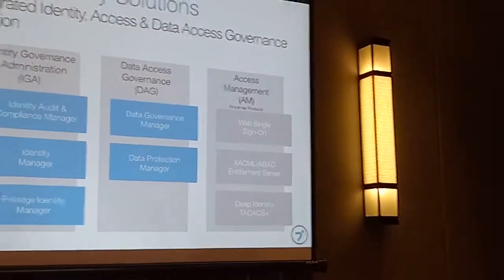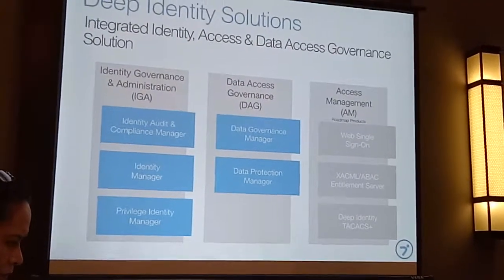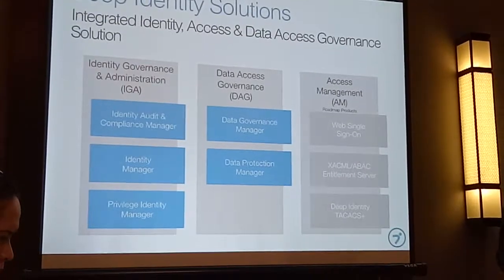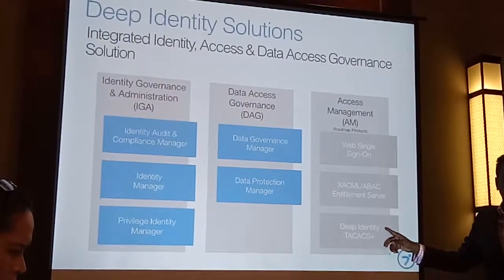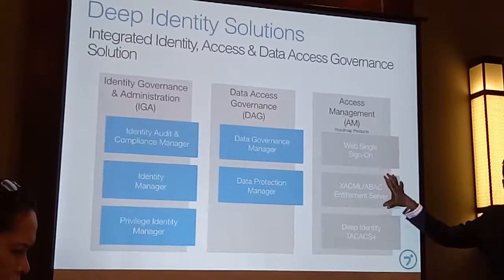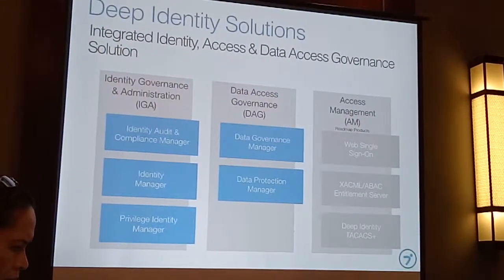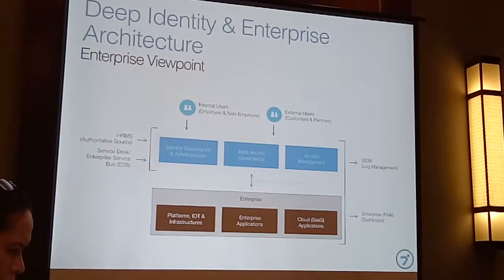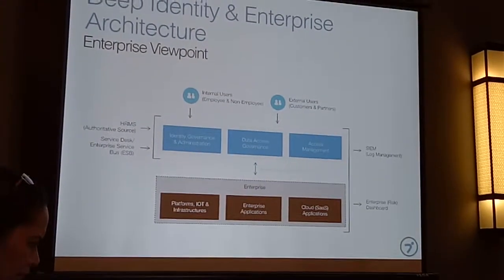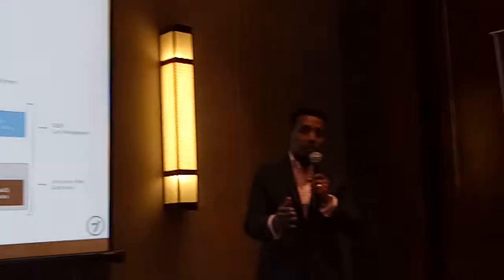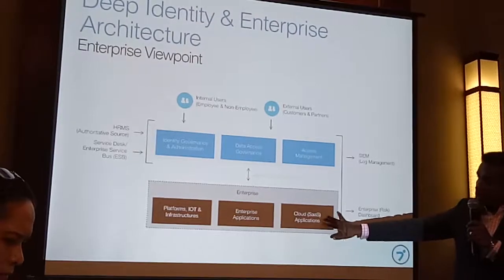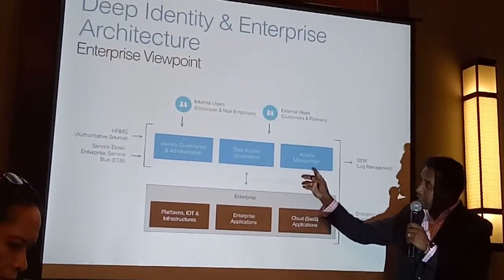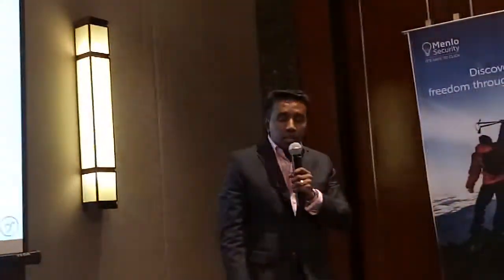I also want to share Deep Identity's roadmap. We are going to soft-launch our Access Management pillar, starting from Web Single Sign-On, an Entitlement Server, and technology that helps manage infrastructure like routers, switches, and appliances — coming sometime this year. What we are trying to address is end-to-end management of users, their access to application infrastructure, and their data. If you look at the diagram, we have enterprise platforms, IoT infrastructure, enterprise applications, and cloud or SaaS-based applications — Deep Identity should be able to manage security across identity governance, data access, and access management.